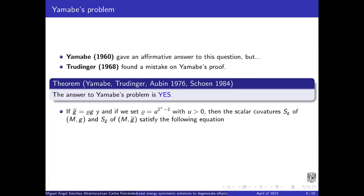If g tilde is equal to the product of rho and g, and if we set rho = u^(2*-2), with u a positive smooth function, the scalar curvatures of the Riemannian manifold satisfy the following equation. It's a partial differential equation.